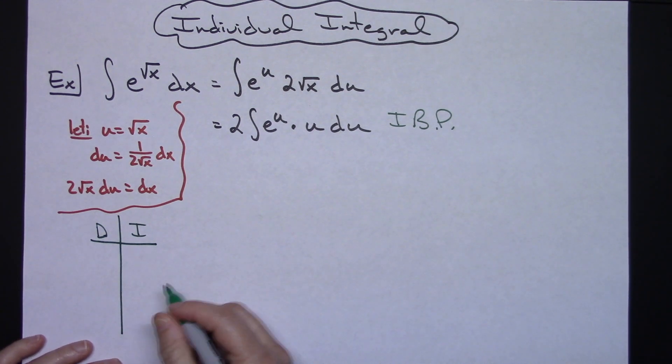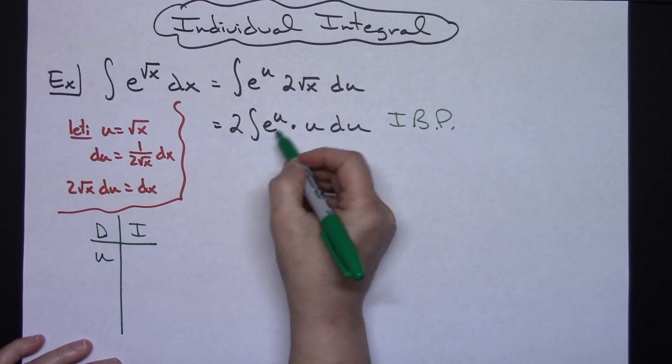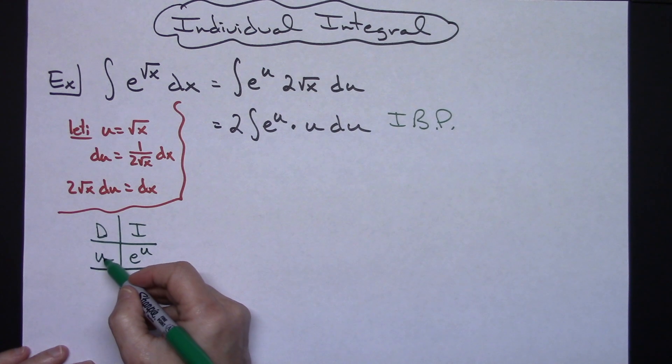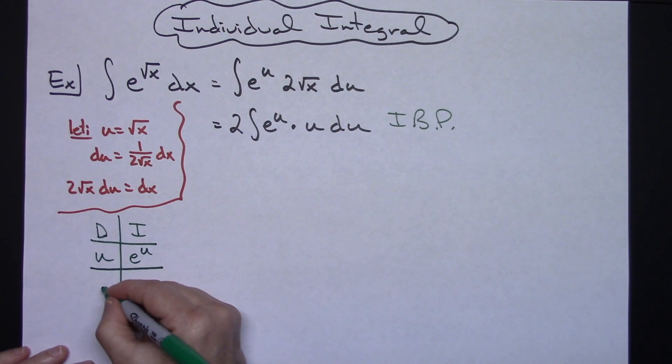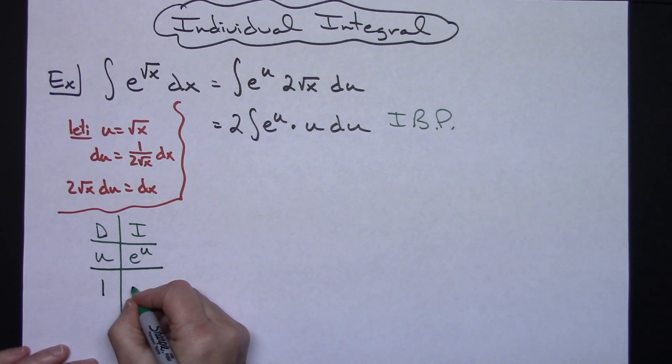In the derivative column I'm going to put my u, and in the integral column I'm going to put the e to the u. So I'm going to take the derivative of u, that's going to give me a 1. Since I've done that now I need to integrate e to the u, I'm going to get an e to the u.